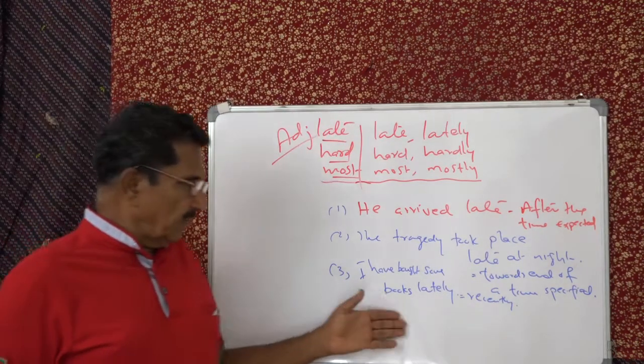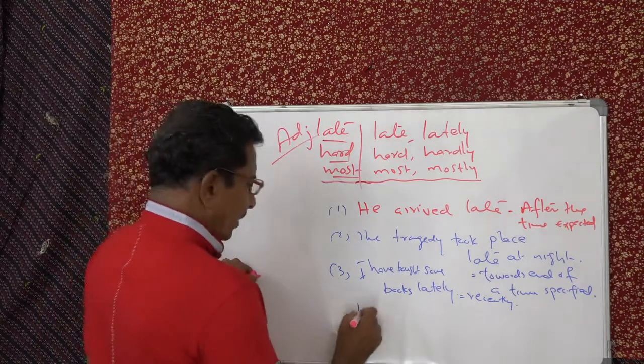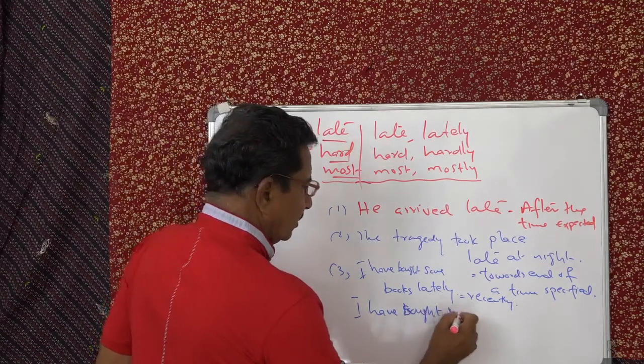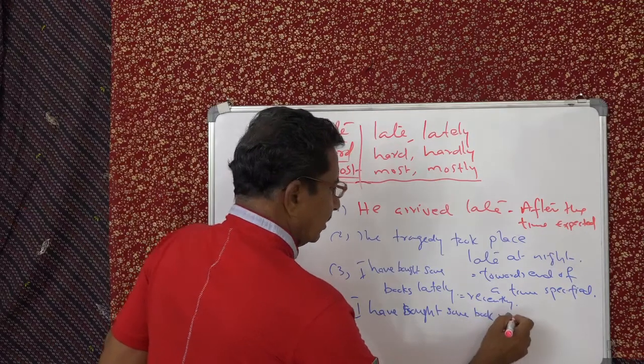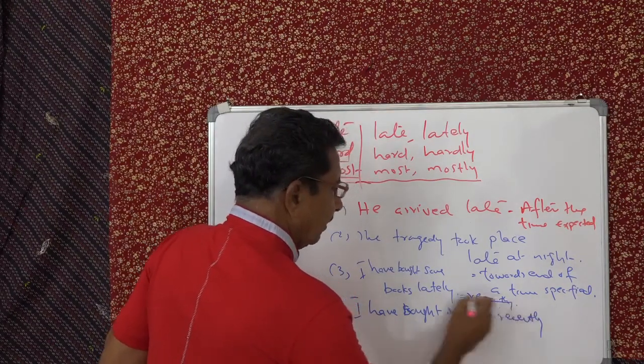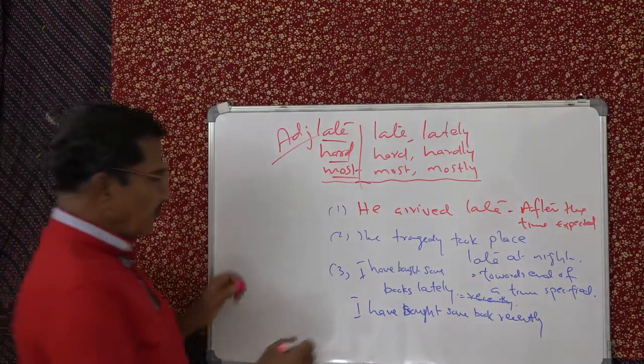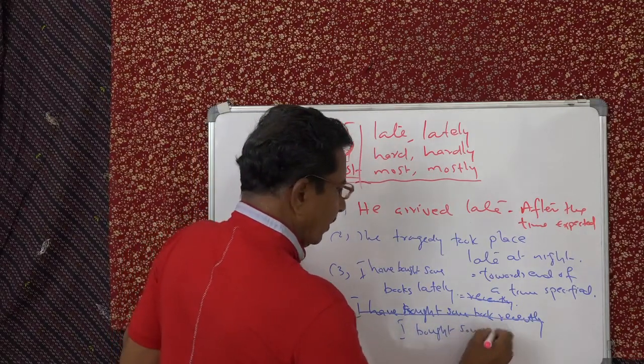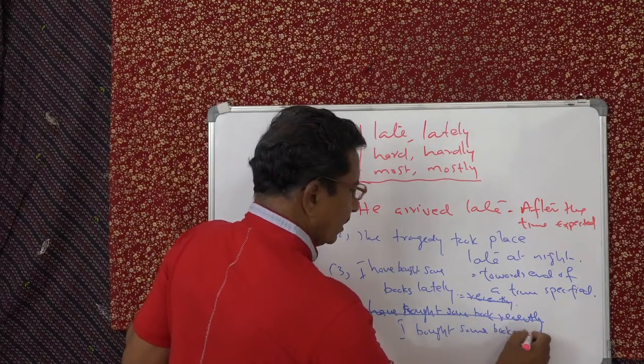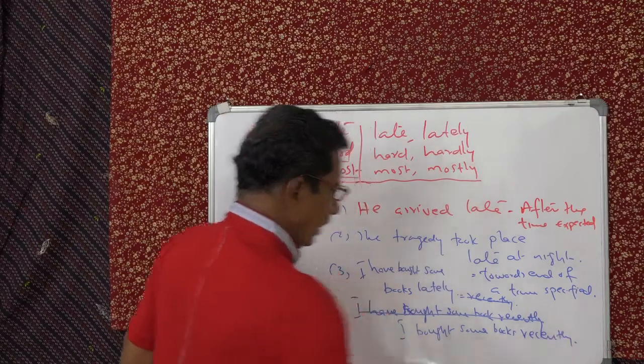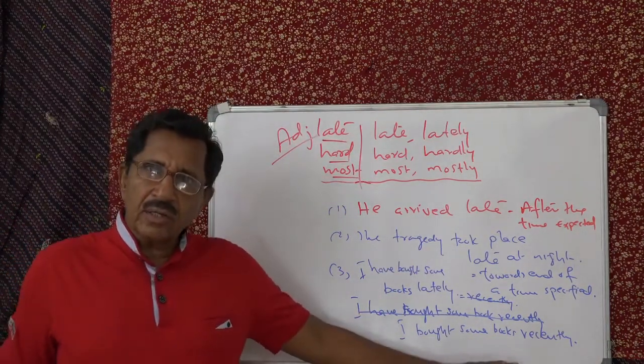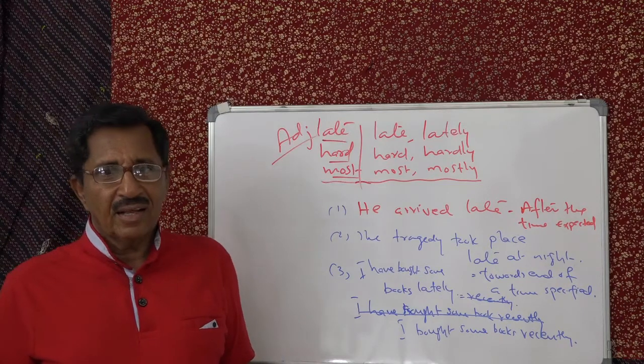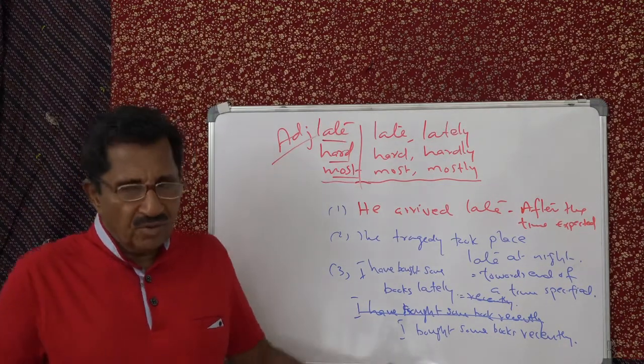I have bought some books lately. You cannot say I bought some books lately. This you cannot say. You can only say lately. There you have to say I bought. This is wrong. You have to say I bought some books recently. This is correct. And the sense, when you are using recently in the sense, you can use only the simple tense. If you are using lately, you have to use the perfect tense. Although the meaning is the same.